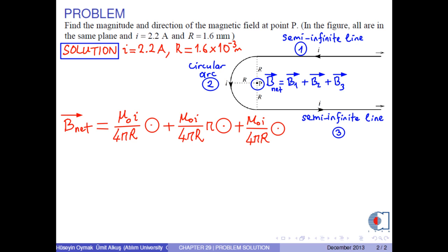In the parenthesis mu 0 times i over 4 pi r, we have 1 plus pi plus 1. All are in the direction out of the screen. So, the net magnetic field is mu 0 times i over 4 pi r times 2 plus pi, which is out of the screen.